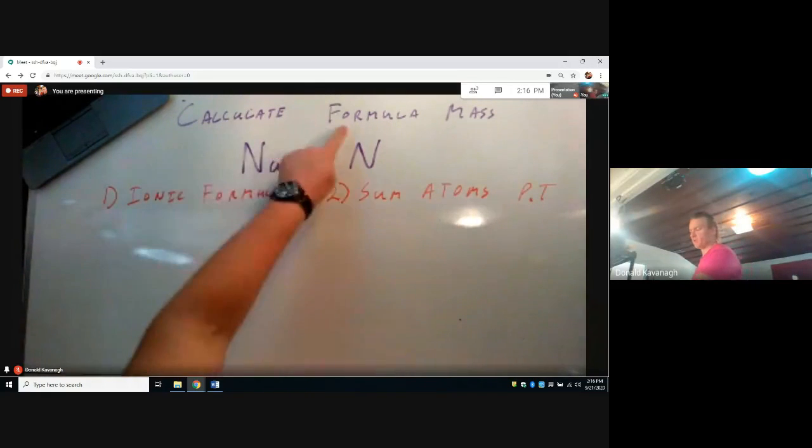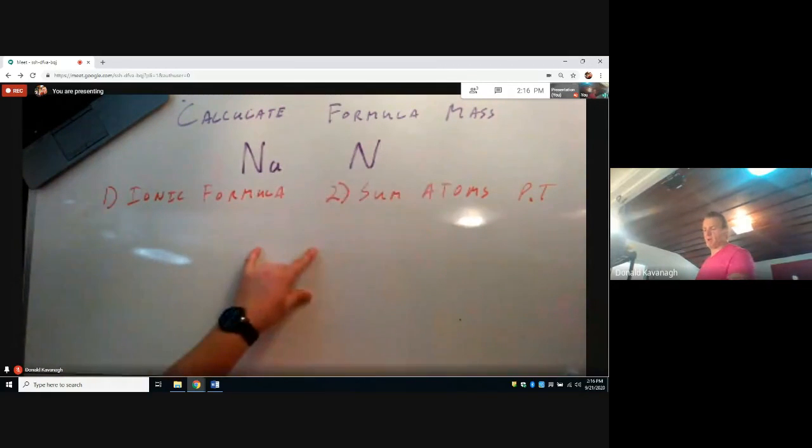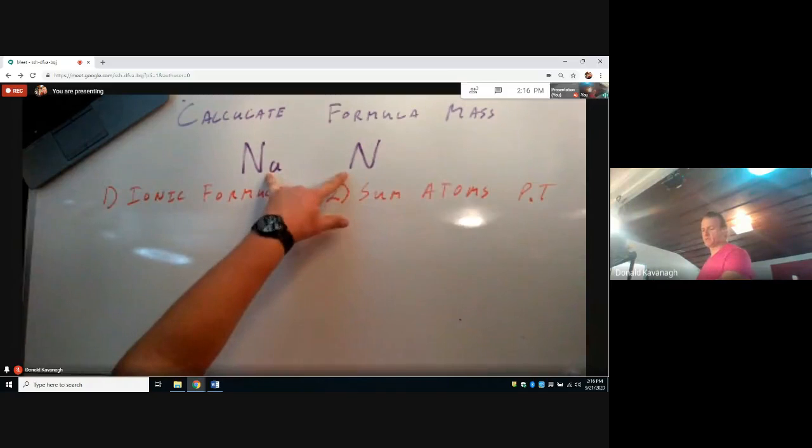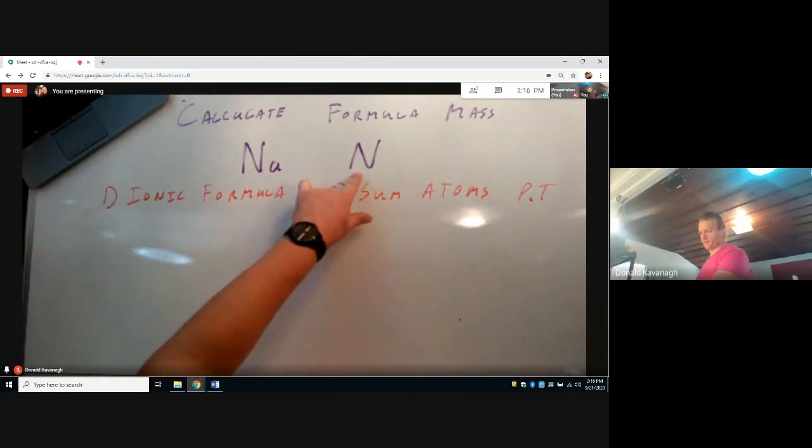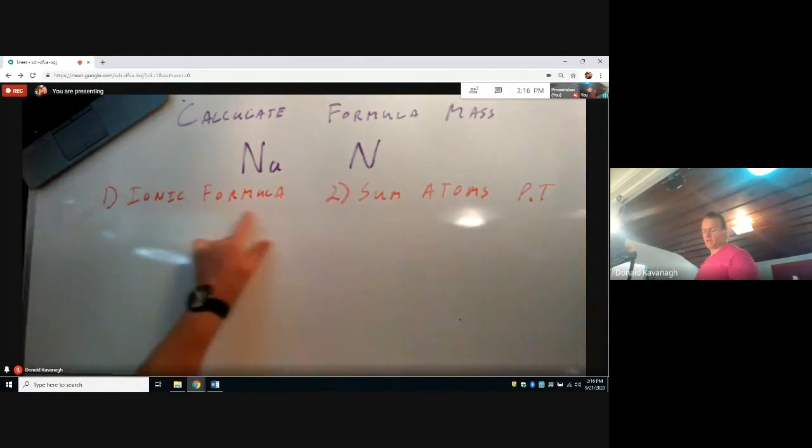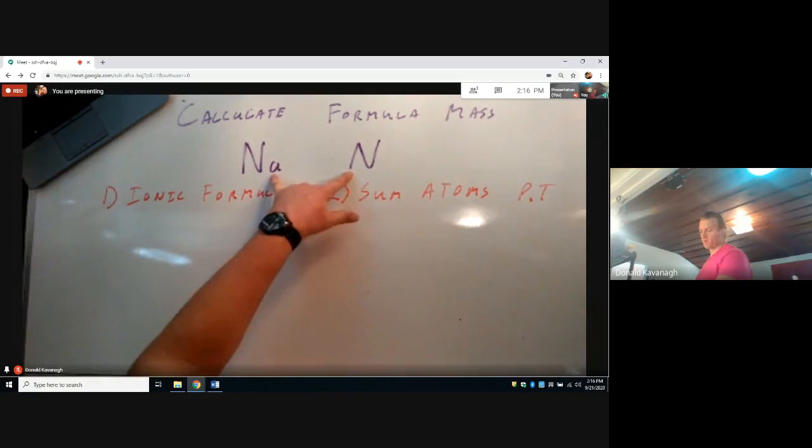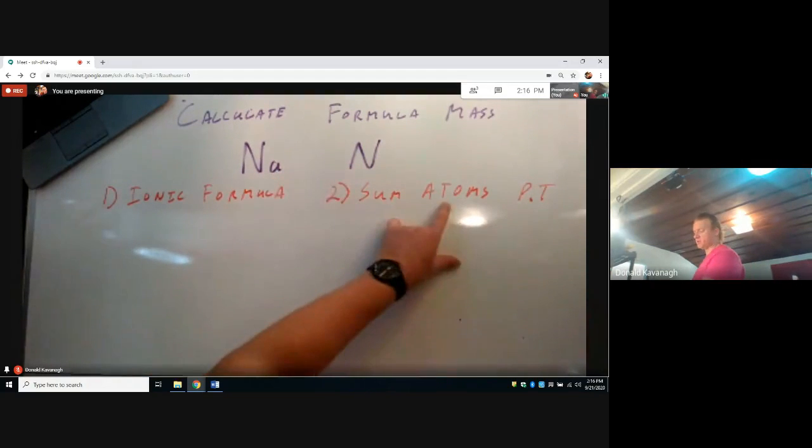We're going to calculate the formula mass of a compound formed between sodium and nitrogen. We're going to calculate in two steps: first, get the ionic formula for a compound formed from these two atoms, and then sum the atomic masses off the periodic table.